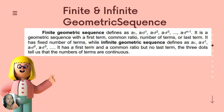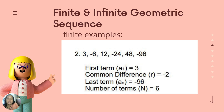Let us define what infinite and finite geometric sequences are. A finite geometric sequence has a fixed number of terms. An infinite geometric sequence has a first term and a common ratio but has no last term, and three dots indicate that the terms are continuous. An example of a finite geometric sequence is: three, negative six, twelve, negative twenty-four, forty-eight, negative ninety-six — with first term three, common ratio negative two, last term negative ninety-six, and six total terms.